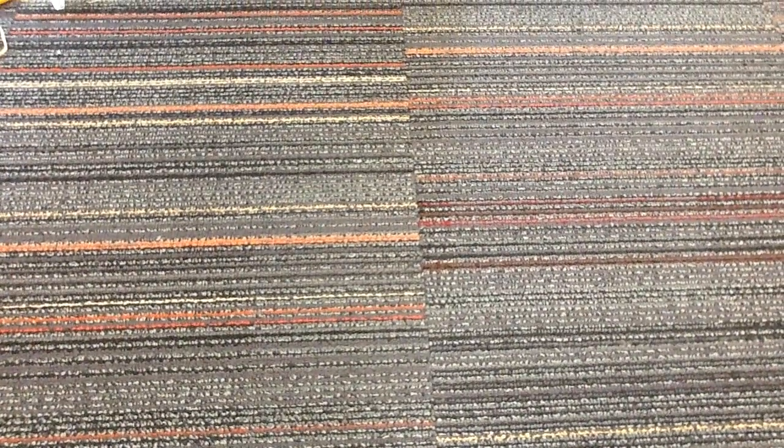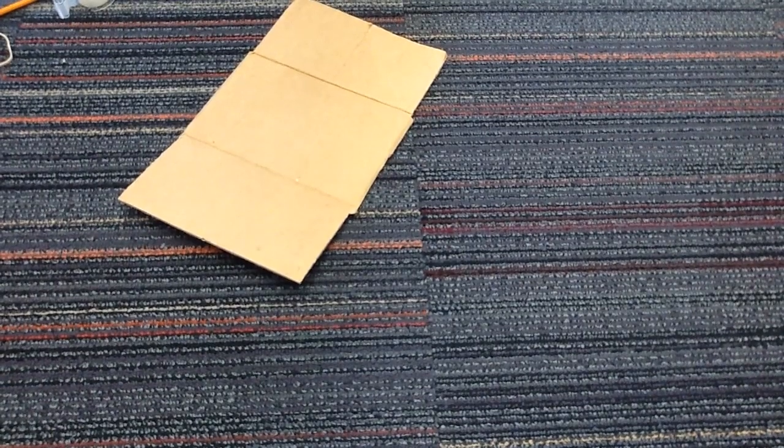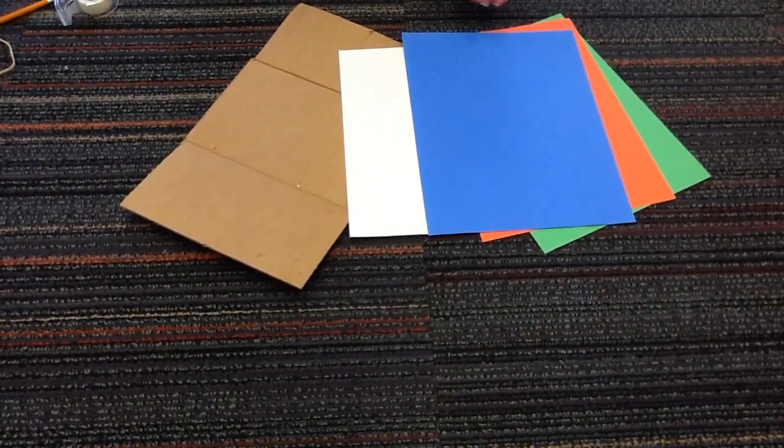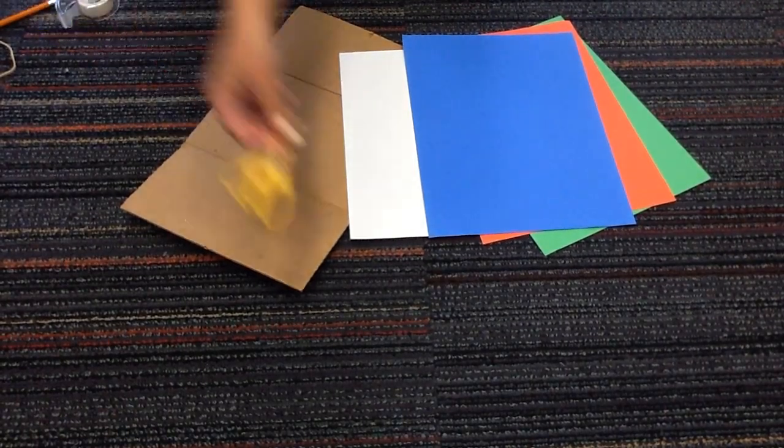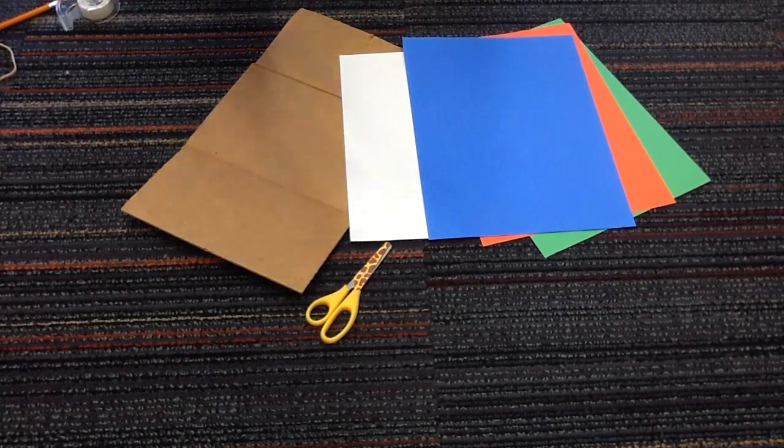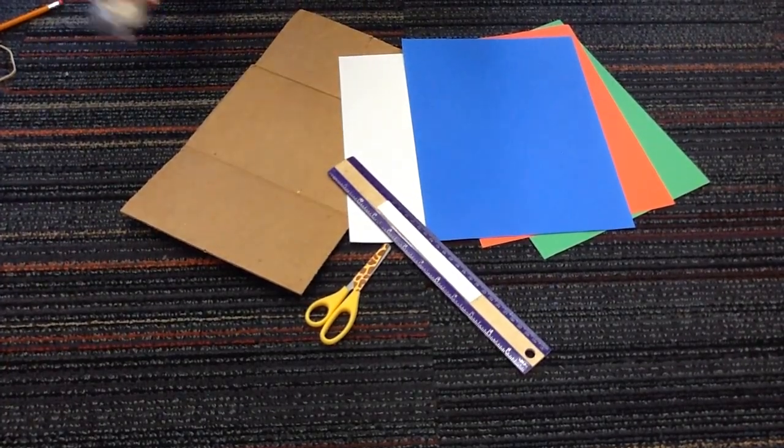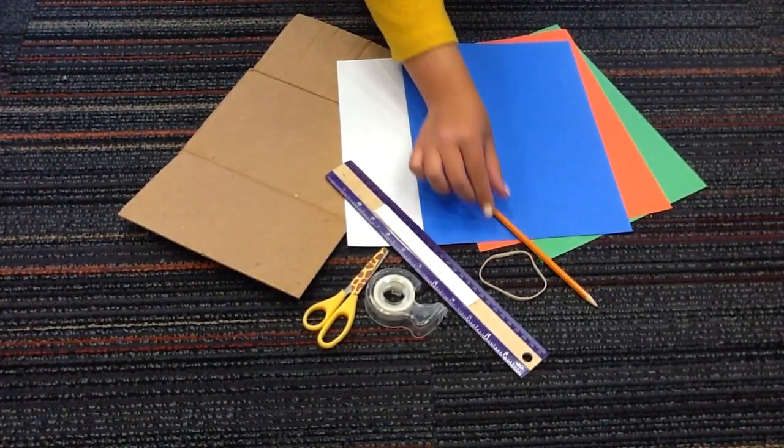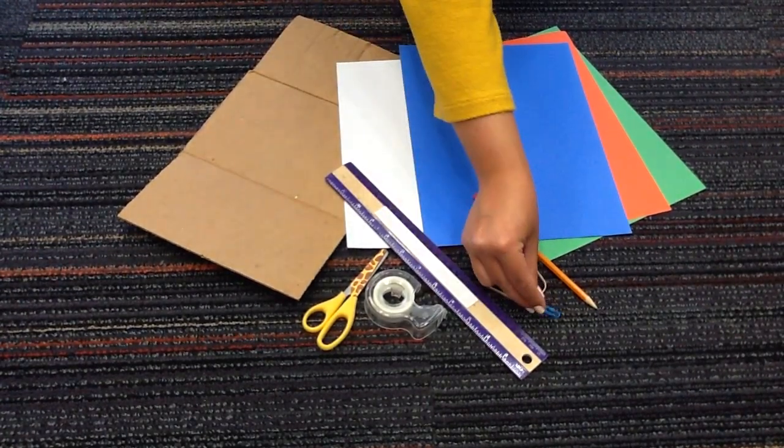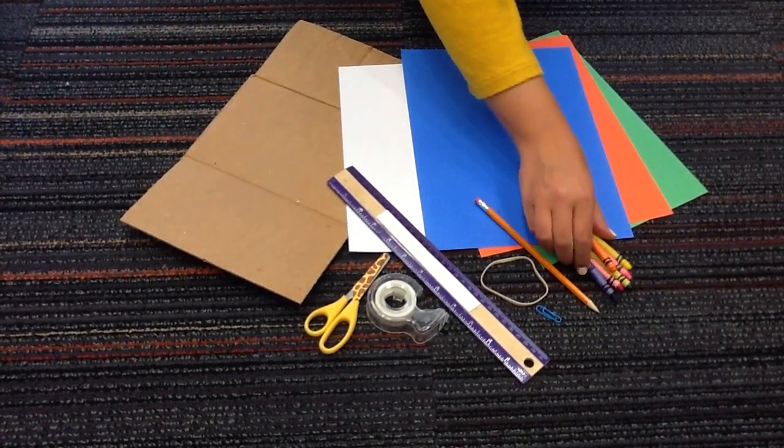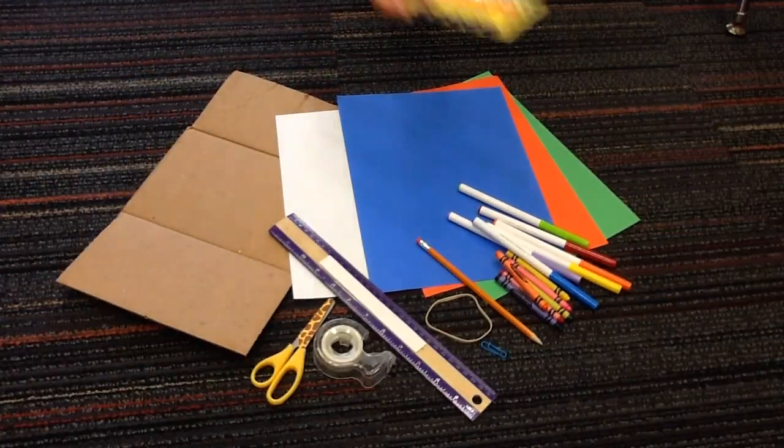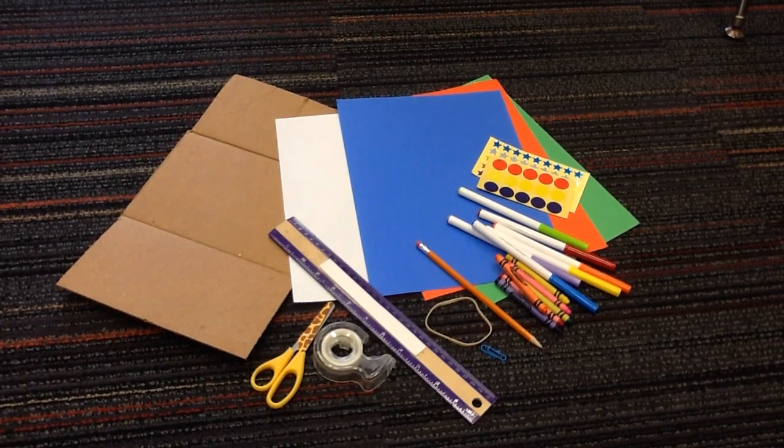The materials that you need are a piece of cardboard, a white piece of paper, colored construction paper to make your own personal airplane, scissors, a ruler, tape, a rubber band, pencil, a paper clip, some crayons or markers, and some stickers or other material you have for decoration.